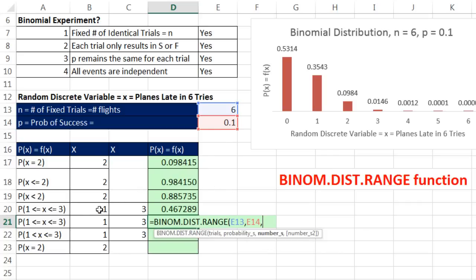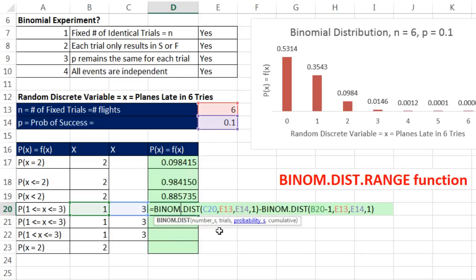So our first example, I'm going to say the lower, and this first one's got to be the lower, comma. That means number of successes. In one day, we had one late flight, comma. Number of successes, we had three late flights in six tries. So to do between, that's it. Control-Enter. We get the same exact probability. So the probability that in one day, we get between one and three flights late is like 46.7%. That's a lot easier than that one.